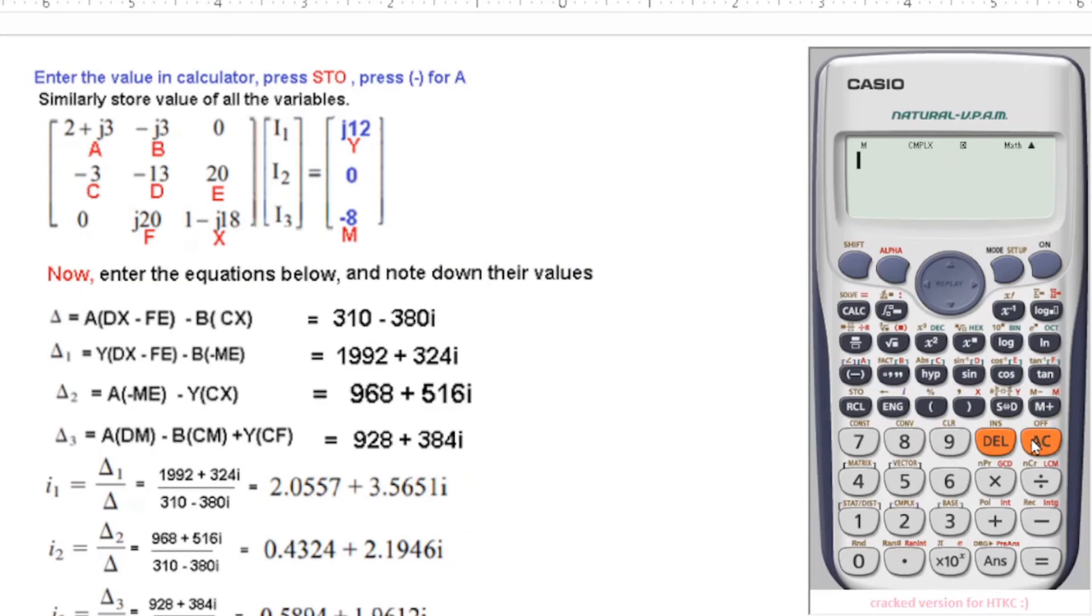Now we calculate delta 2. A(ME). Alpha A, bracket, minus alpha M, alpha E, bracket close, minus, alpha Y, alpha C, and alpha X. Equal sign: 968 + 516i. This is what we have written here. And then finally delta 3: A(DM) minus B(CM) plus Y(CF). Alpha A, alpha D, alpha M, minus alpha B, alpha C, alpha M, plus alpha Y, alpha C, and alpha F. Equal sign: 928 + 384i.